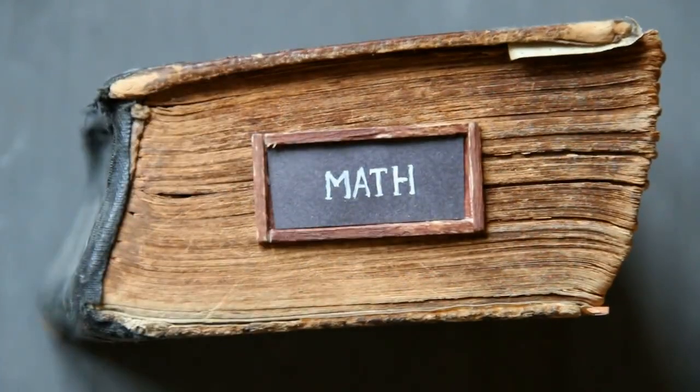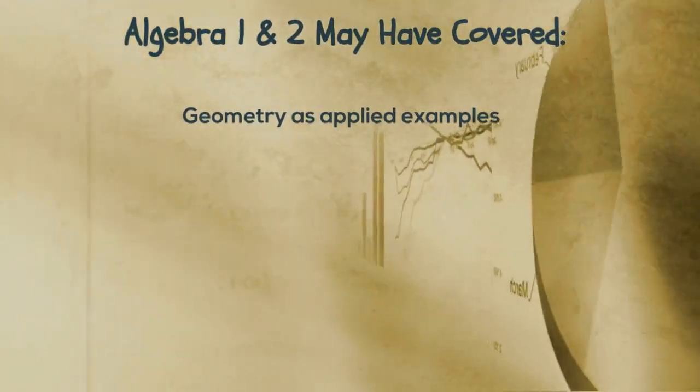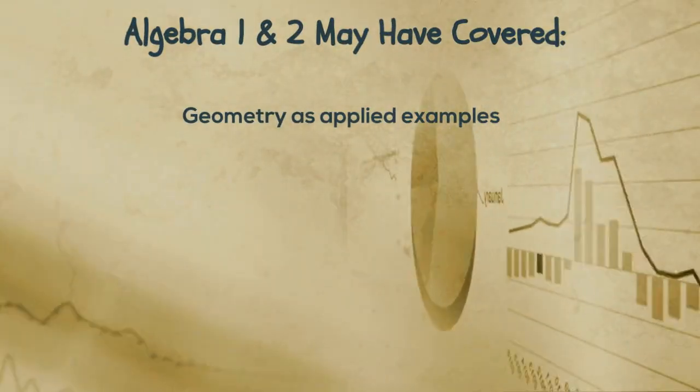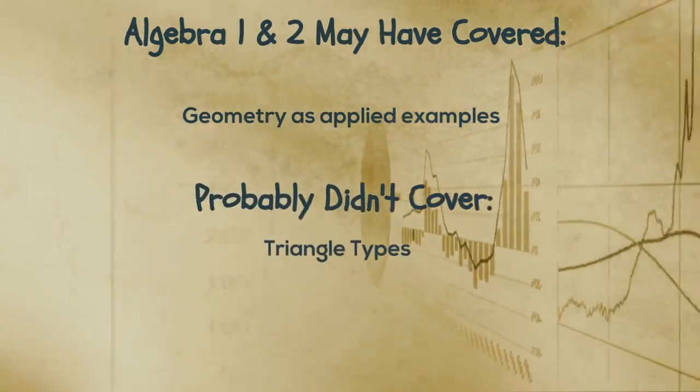Otherwise, schools might offer statistics and probability in a separate course. Algebra 1 and 2 might have covered some of the geometry as applied examples, but not included details like triangle types or parallel lines.